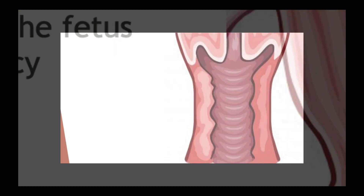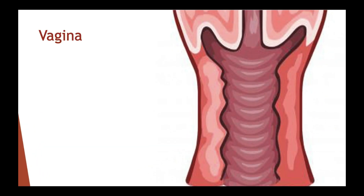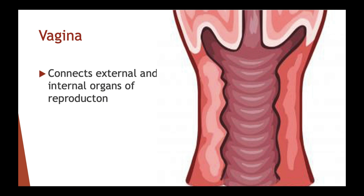The vagina is a muscular but elastic chamber lined by stratified epithelium. It connects the external and internal organs of reproduction. It is the site where sperm is deposited by the penis and it also acts as the birth canal during birth.